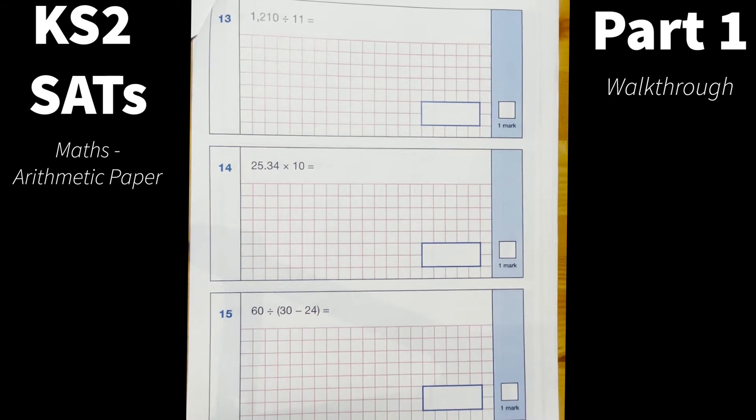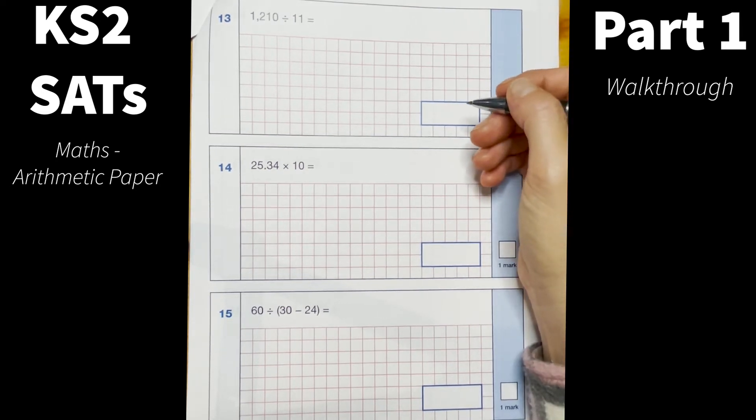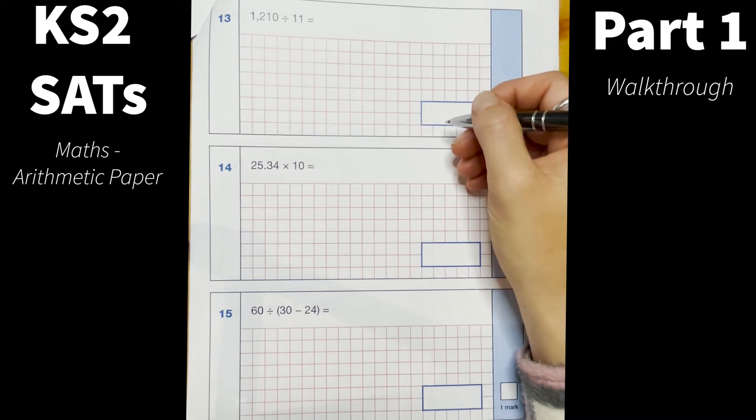Okay number 13, 1210 divided by 11. And again this question children can use their knowledge of their multiples, so their 11 times table. 11 times 11 is 121, so therefore what I need to do is times this by 110 and that will give me my answer.